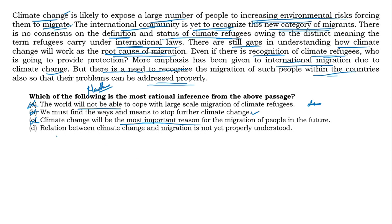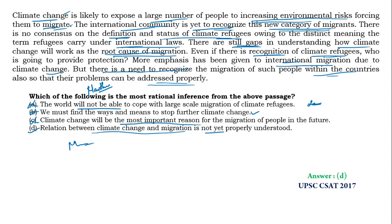Statement 4: 'There are still gaps in understanding how climate change will work as the root cause of migration.' Just by reading the statement we can tell it is correct — the same statement is directly in the passage. At the same time the author speaks about climate refugees and migration due to climate change throughout, making this the main theme. Option D is the right answer. Yes, option D is correct.